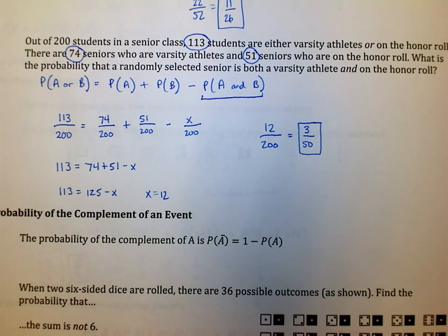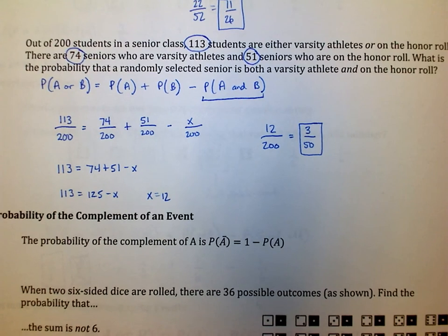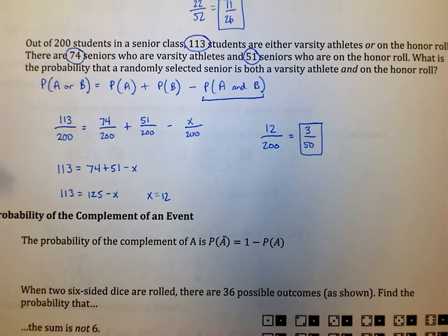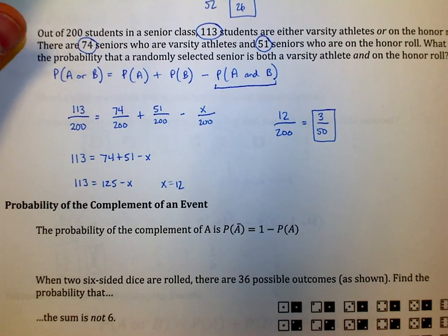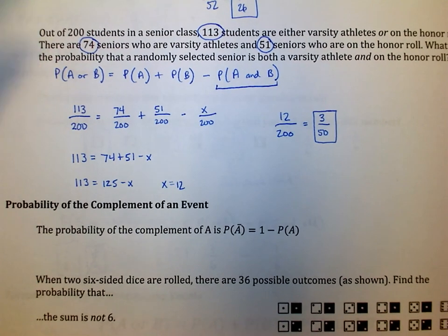Hopefully that makes sense. That's how you do disjoint and overlapping problems. I got one video left for you. We got to do probability of the complement of an event. That'll take about two seconds to do.